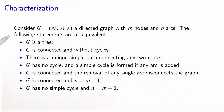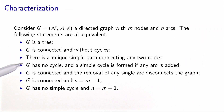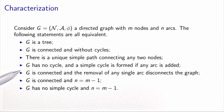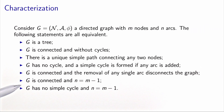So with a graph G with n nodes and m arcs, we say that G is a tree if and only if G is connected and without cycles — this is the definition. If and only if there is a unique simple path connecting any two nodes. If and only if G has no cycle, and a simple cycle is formed if any arc is added. If and only if G is connected, and the removal of any single arc disconnects the graph. If and only if G is connected, and the number of arcs is equal to the number of nodes minus one. If and only if G has no simple cycle, and the number of arcs is equal to the number of nodes minus one.